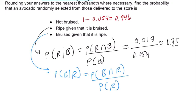So bruised given ripe—you can see that's slightly different. Now ripe and bruised, bruised and ripe, we're not really distinguishing between the order. So that's just 0.019, and probability that it's ripe is 0.12. If you divide those two, you get 0.158.